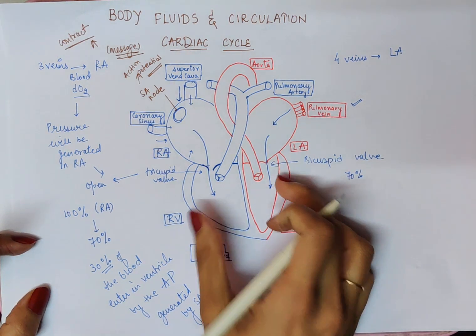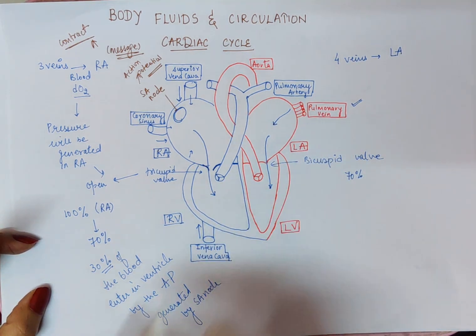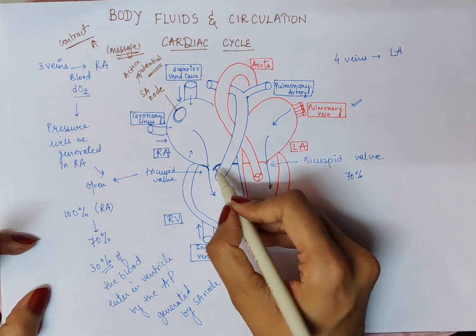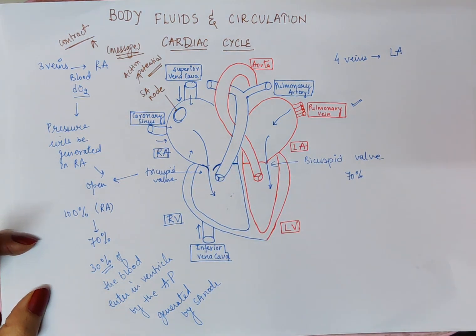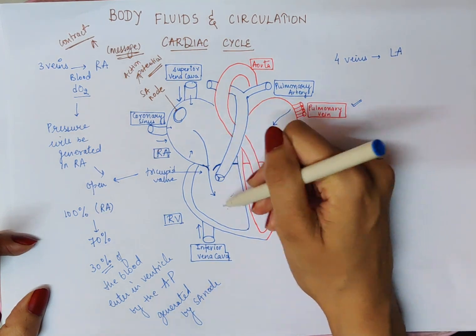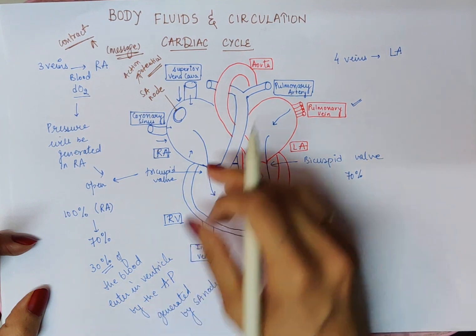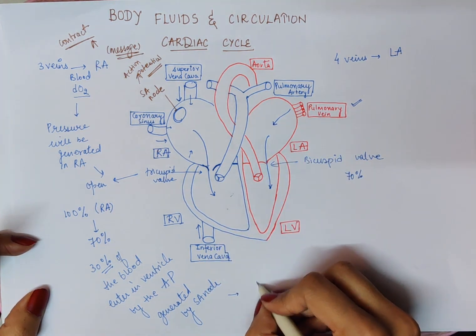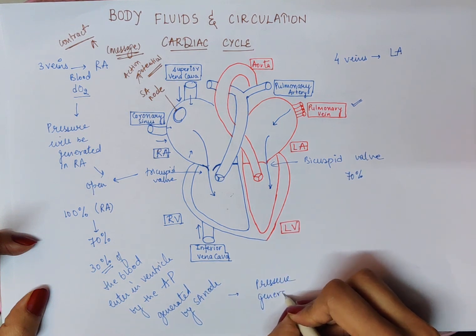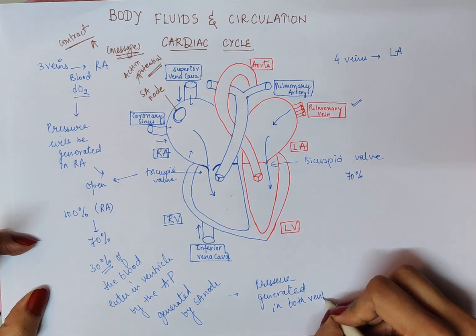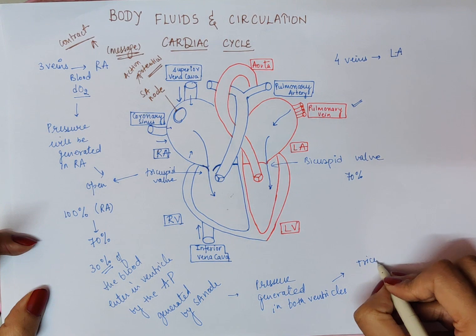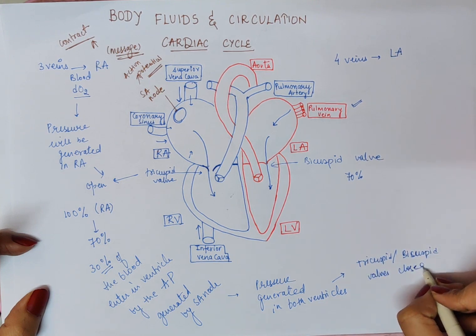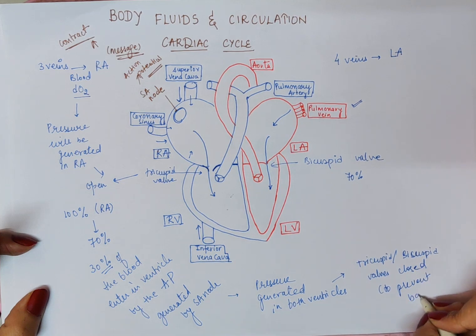Now, pressure is generated in the ventricles as all the blood has entered. Due to this pressure generated in both ventricles, the tricuspid and bicuspid valves will be closed so that there is no backflow of blood from the ventricles back into the atria.